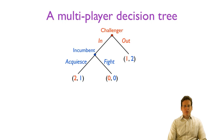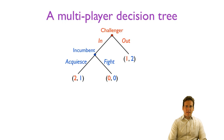In an extensive form game, we have an opportunity to incorporate the temporal structure of the moves of the players. In this game, for instance, the challenger gets to move first and choose whether to enter a market or stay out, and then the incumbent can acquiesce that entry or fight it. And of course, if the challenger stays out, the incumbent doesn't even make a choice in this kind of game.